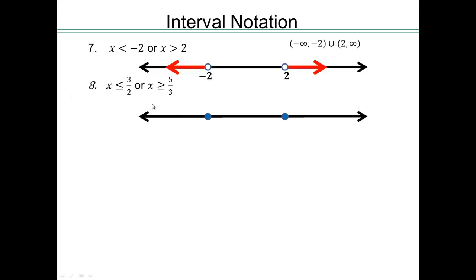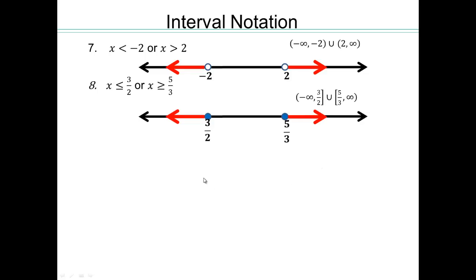Same kind of interval except three-halves and five-thirds are included this time, along with everything below three-halves and everything above five-thirds. So instead of round brackets, you use square brackets. That gives: negative infinity to three-halves with a square bracket, union square bracket five-thirds to infinity. Remember, negative infinity means keep going to the left, and positive infinity means keep going up from the number.